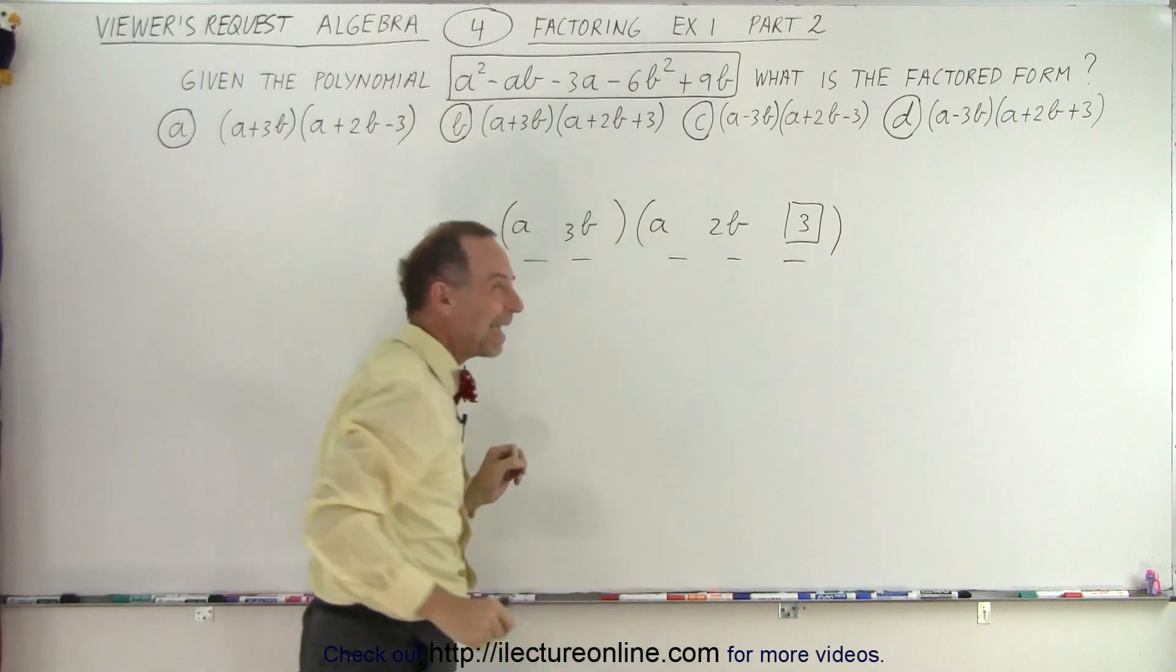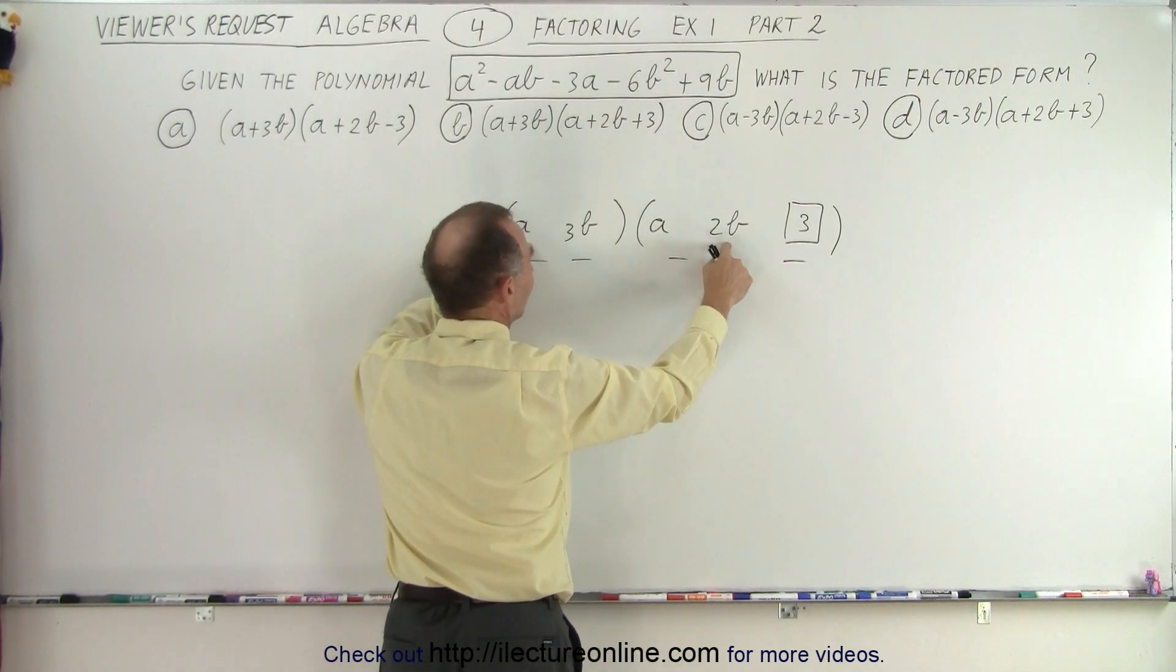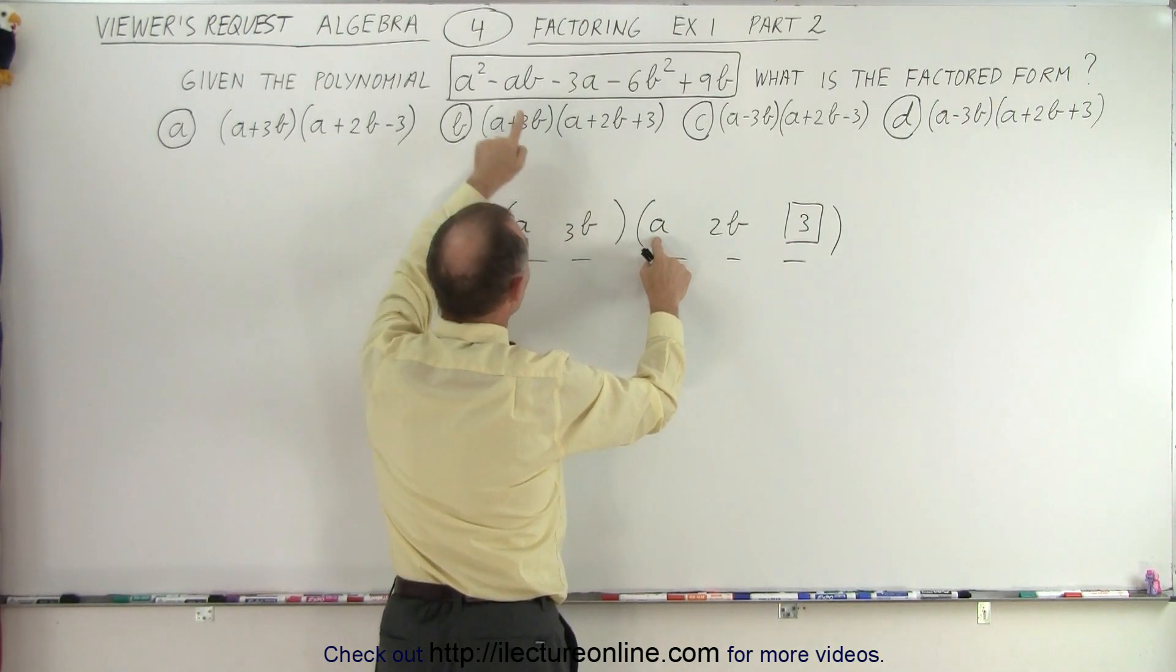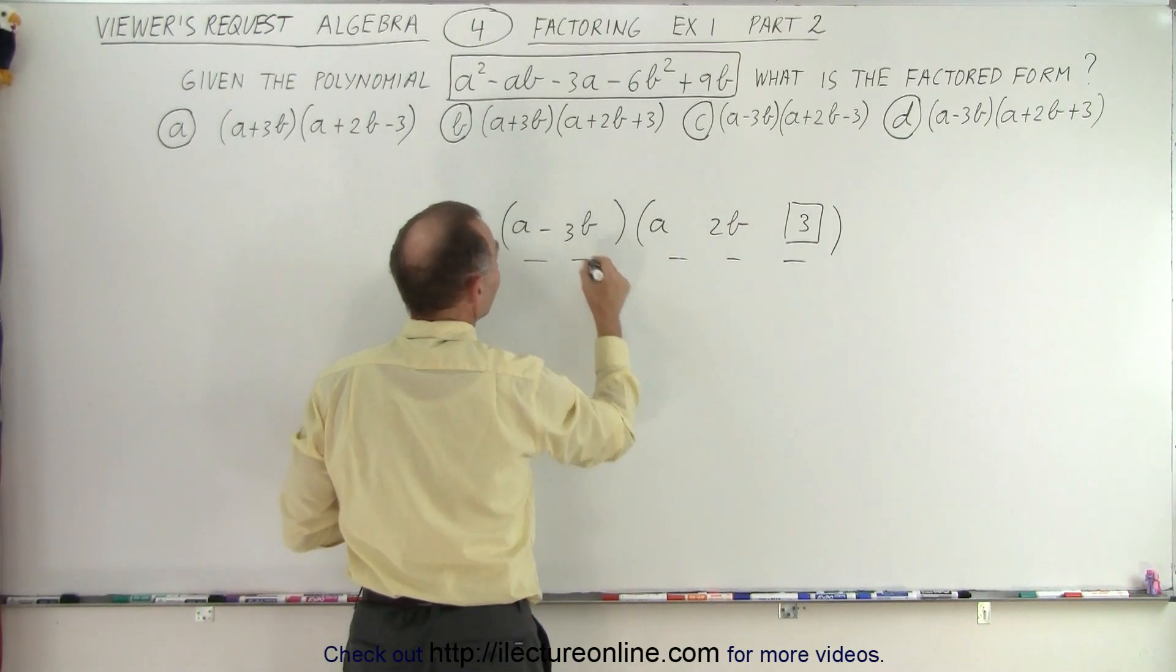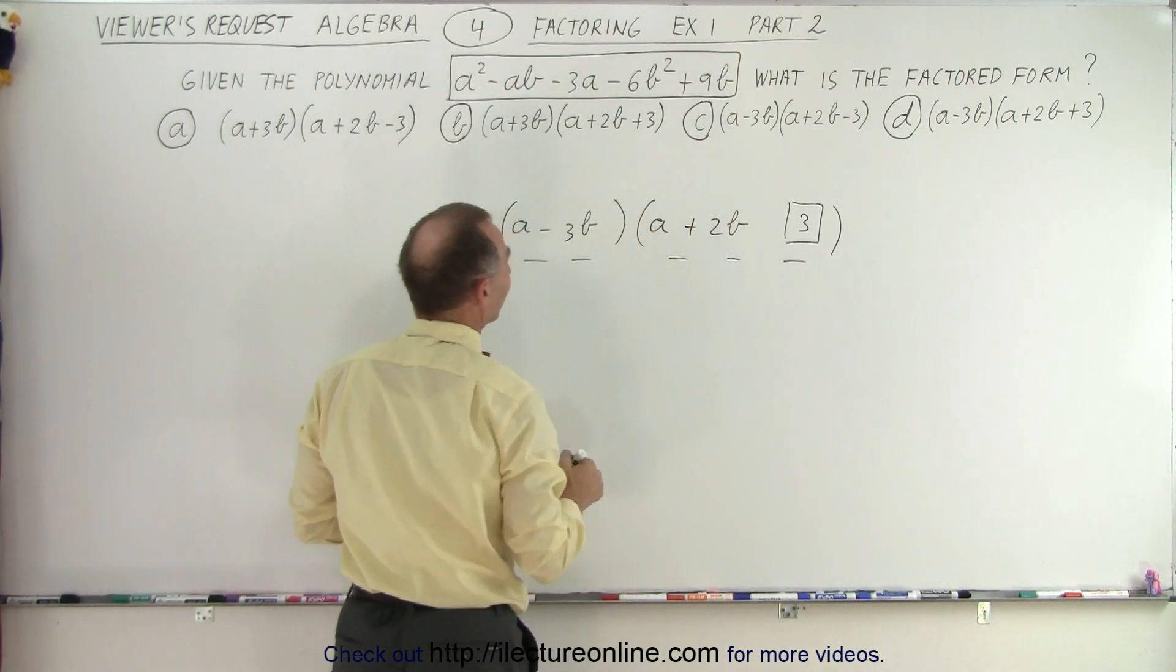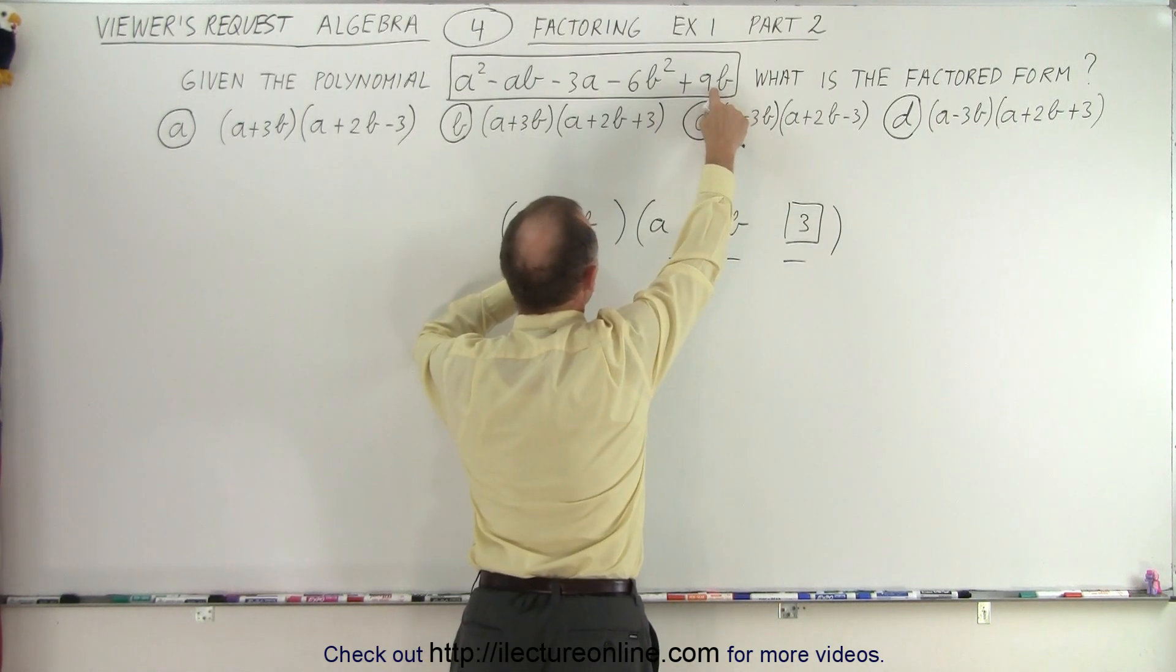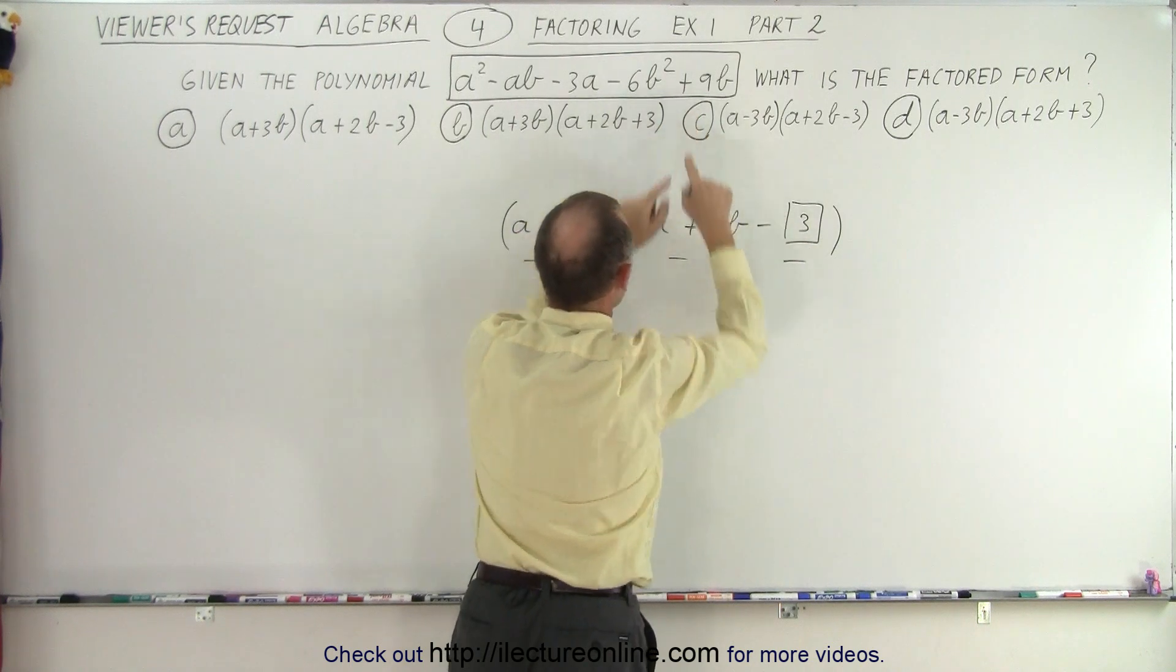That means that if this is a positive two a b, and this gives me a negative three a b, if I sum them together, I get a negative one a b. That means that this must be negative, and that must be positive. And finally, this times this should give me a positive nine b. That means that this must also be negative, because negative times negative gives me a positive.